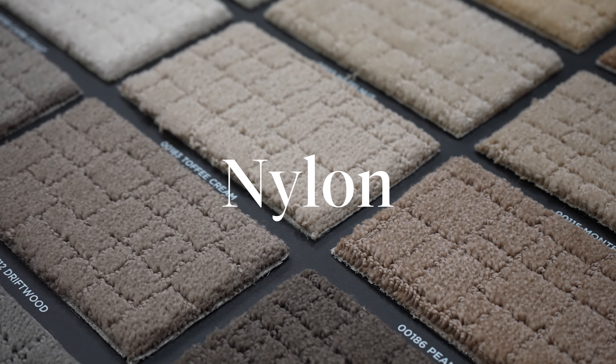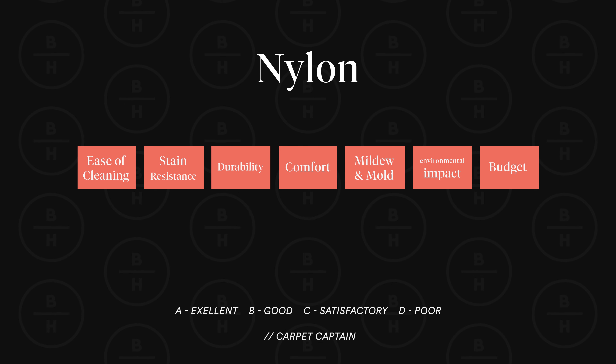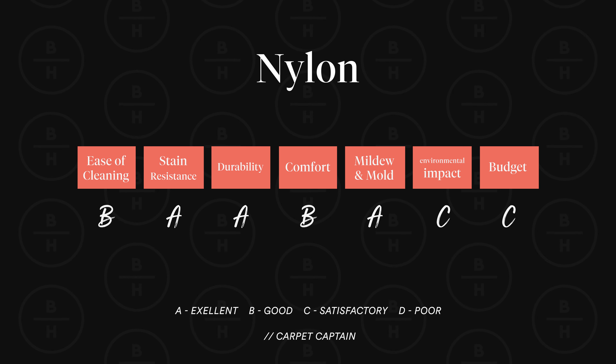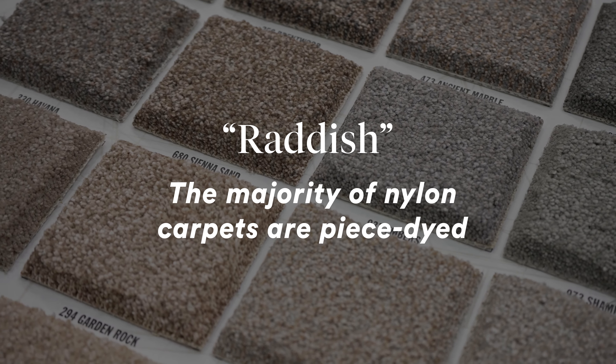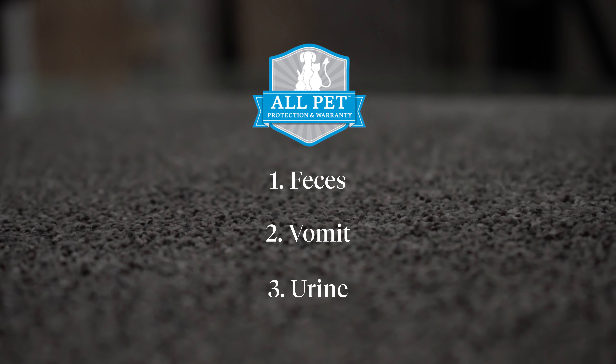Next, let's talk about nylon — a huge category with many different types and varying qualities, but overall nylon is a high-quality fiber. It resists staining, resists matting down, and is excellent in high traffic areas. The majority of nylons fall into the radish category — color only on the outside — but there is a section of solution-dyed nylons that are best for pets as well. Just like SmartStrand, solution-dyed nylon is also warrantied for all three pet stains we discussed.